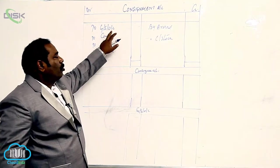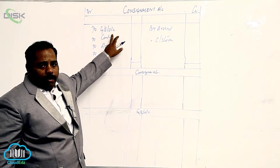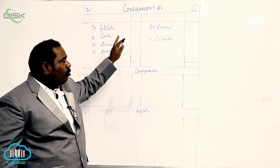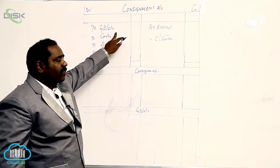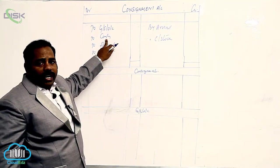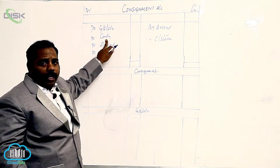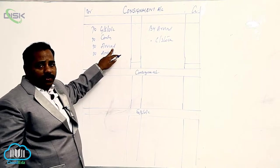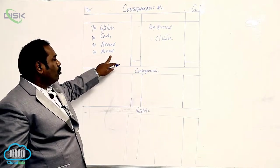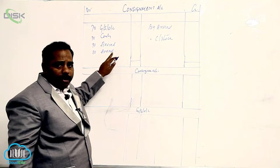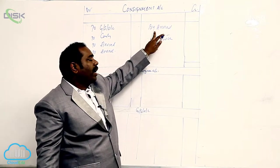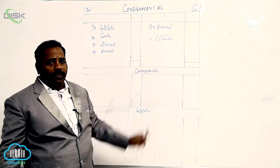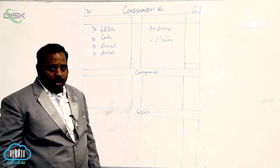When we send the goods on consignment, the entry is: Consignment Account debit, to Goods Sent on Consignment. For expenses met by consignor: debit Consignment, to Cash. For expenses met by consignee: debit Consignment, to Consignee. For commission: debit Consignment, to Consignee. For sales: by Consignee. For unsold stock: by Consignment Stock.